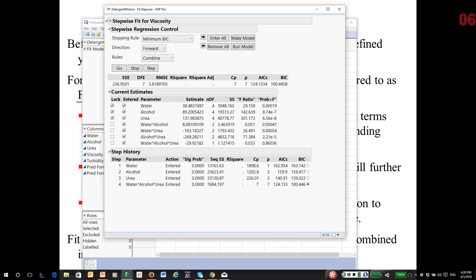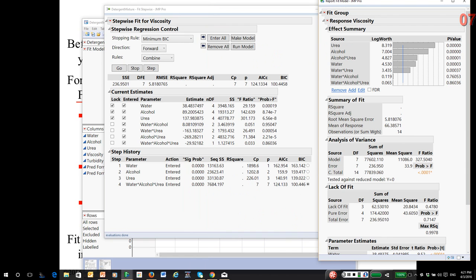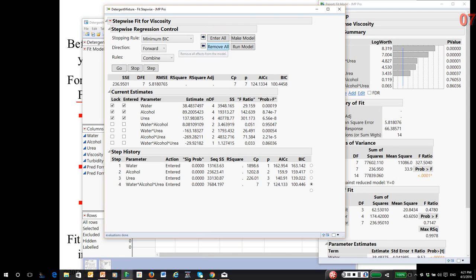JMP opens up something called a Fit Group. Again, we're going to use this a lot in the future. And a Fit Group is basically a Fit Model Report, but it groups together reports for a number of different models. So I'm going to set that aside for now. And I'm going to go and remove all the terms again.